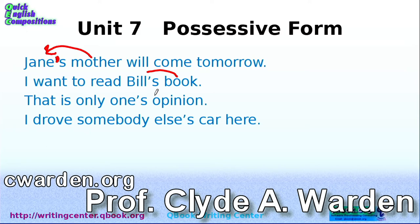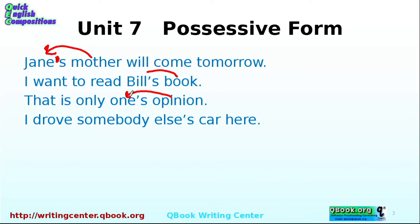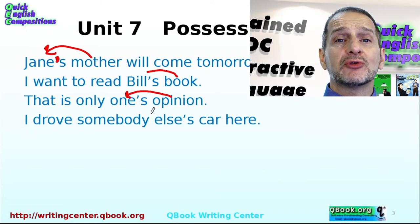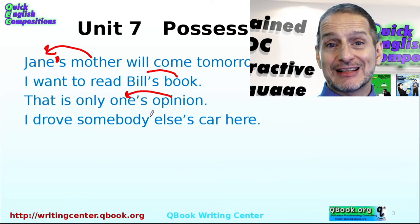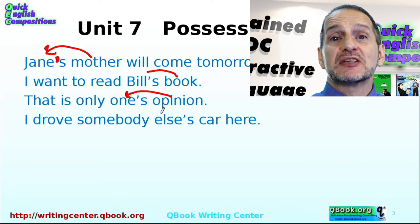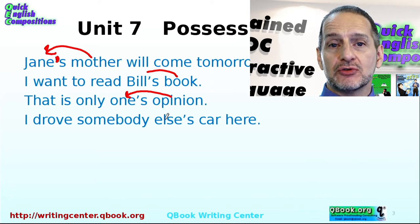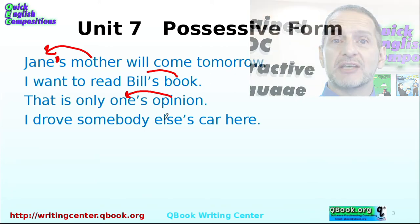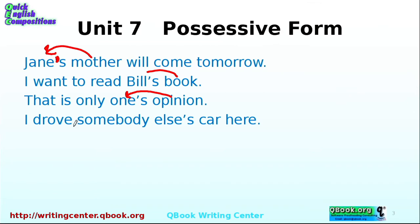'That is only one's opinion.' So this opinion belongs to someone — we don't really know who, the pronoun is not clear about who that is, but it's somebody. You can still use an apostrophe that way. 'I drove somebody else's car here.' So the car belongs to somebody else.